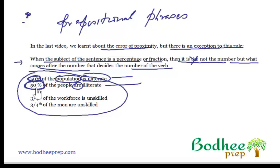On the other hand, when you have 50% of the people, people is a plural countable noun. And therefore, the verb is are. So instead of 50% deciding the verb, it is what comes after. And that is the prepositional phrase that decides whether the verb is singular or plural.